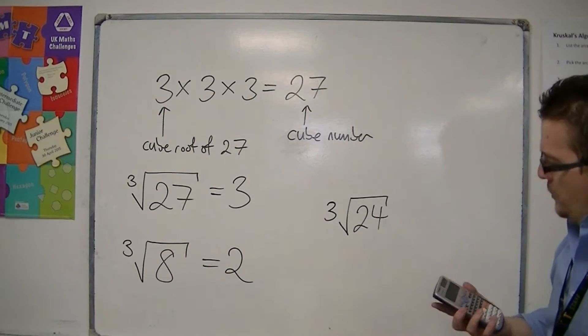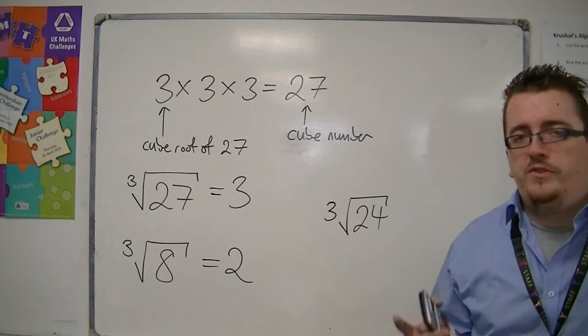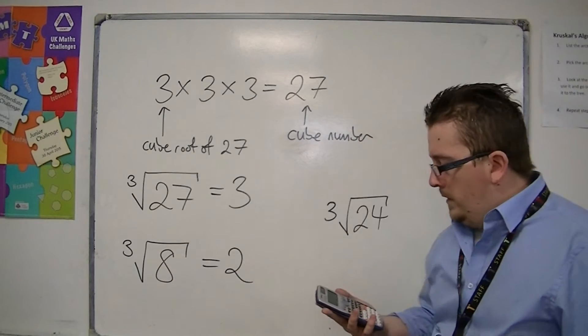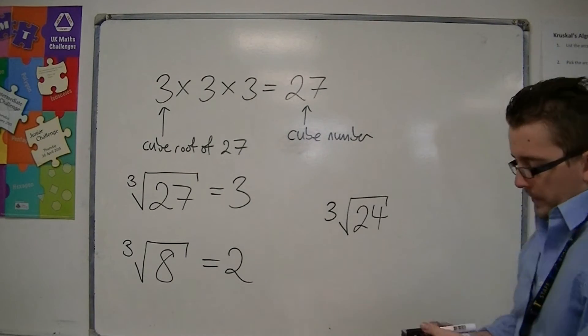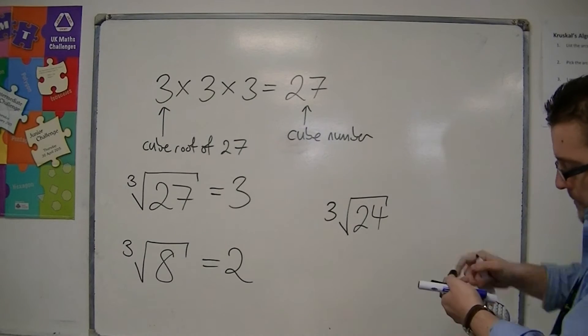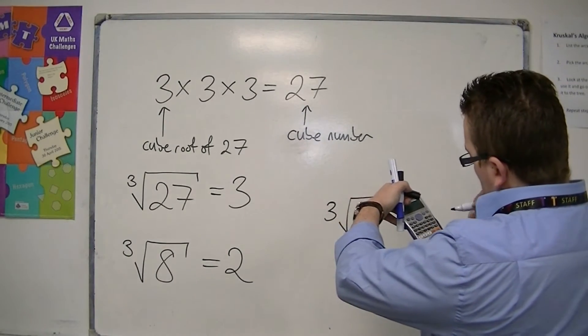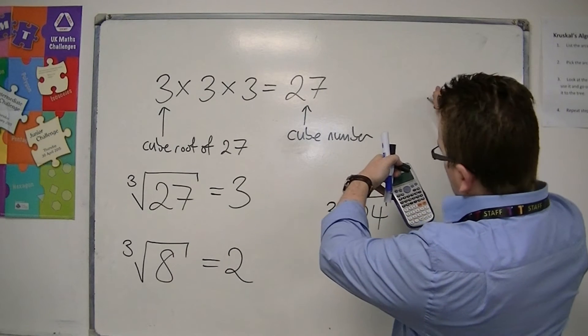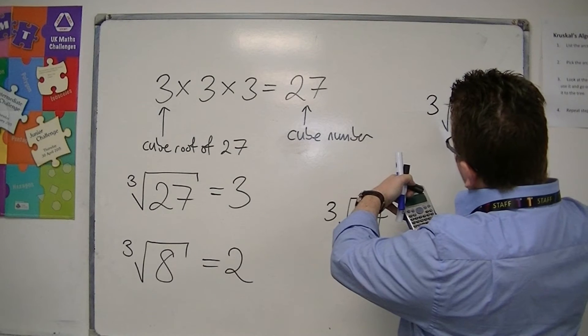So you need to be able to find the cube root of a number using your calculator. Now, on a Casio, like this, there is a button for cube root, and it is found in yellow and looks like that.